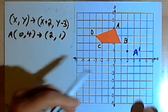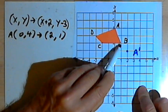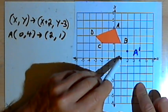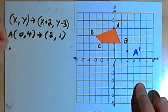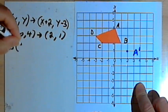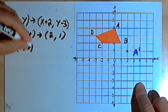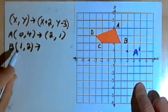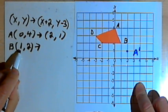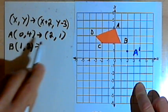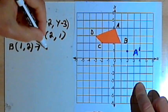Then we'll do the same thing for the other four points. Point B is at (1, 2). And the x-coordinate, 1, I'm going to take that and add 2 to it, so that'll become a 3.